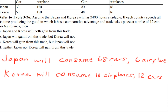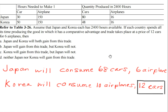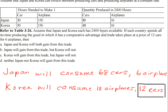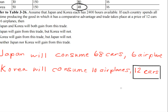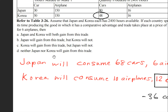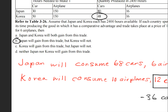Now take a close look at those 12 cars — that is a very small amount and Korea is not benefiting from this. If we look at the table, Korea already can produce 48 cars without even trading, so it just lost 36 cars that it could have easily made itself. So to answer this question: Japan is going to gain from the trade, but Korea will not.